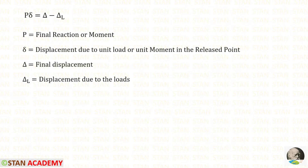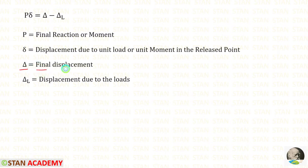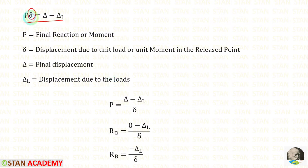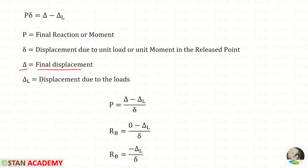Now let us see the formula to find Rb. P·delta equals delta matrix minus delta_L matrix, where P is the final reaction or moment, delta is the displacement due to unit load at the release point, and delta_L is the displacement due to the applied loads. We can take delta to the other side so it comes into the denominator. Since P is Rb and there is no settlement at point B, the final displacement delta equals 0, giving us: Rb = minus delta_L divided by delta.